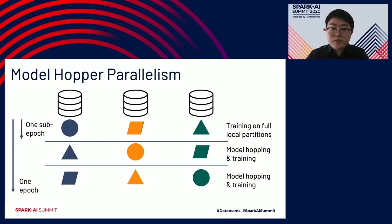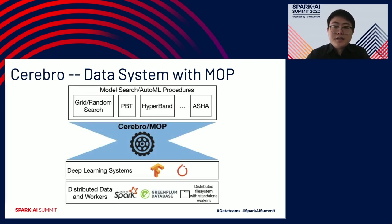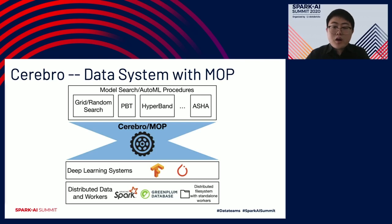Here is our system, Cerebro, which implements MHP. It has a narrow-waist architecture that supports various model search and auto-ML procedures like PBT and Hyperband, as well as multiple deep-learning systems and execution backends. For deep learning, we support TensorFlow and PyTorch. For backends, we have Spark, Greenplum database, and also a standalone version of Cerebro. In this talk, we will focus on TensorFlow with Spark. Please welcome my co-presenter, Supan, who will talk about the implementation and details of Cerebro and MHP on Spark.